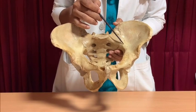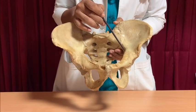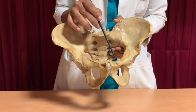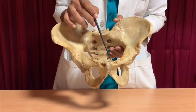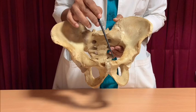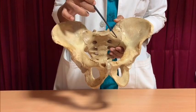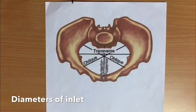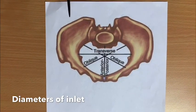The iliopectineal line, the pectineal line, and the pubic crest together are called the linea terminalis. Now we will have a look at the diameters of the pelvic inlet.